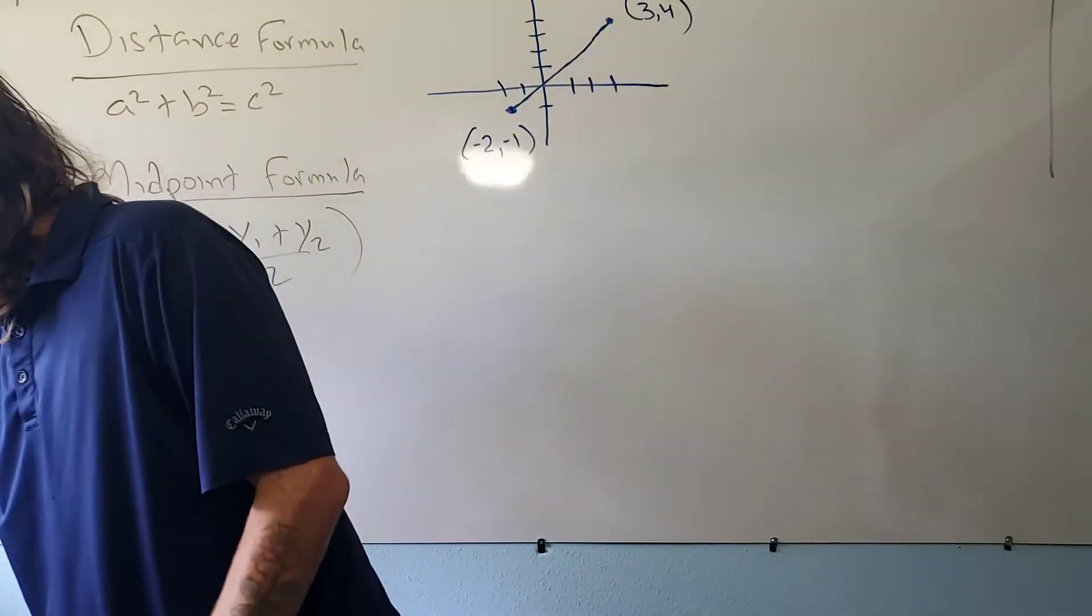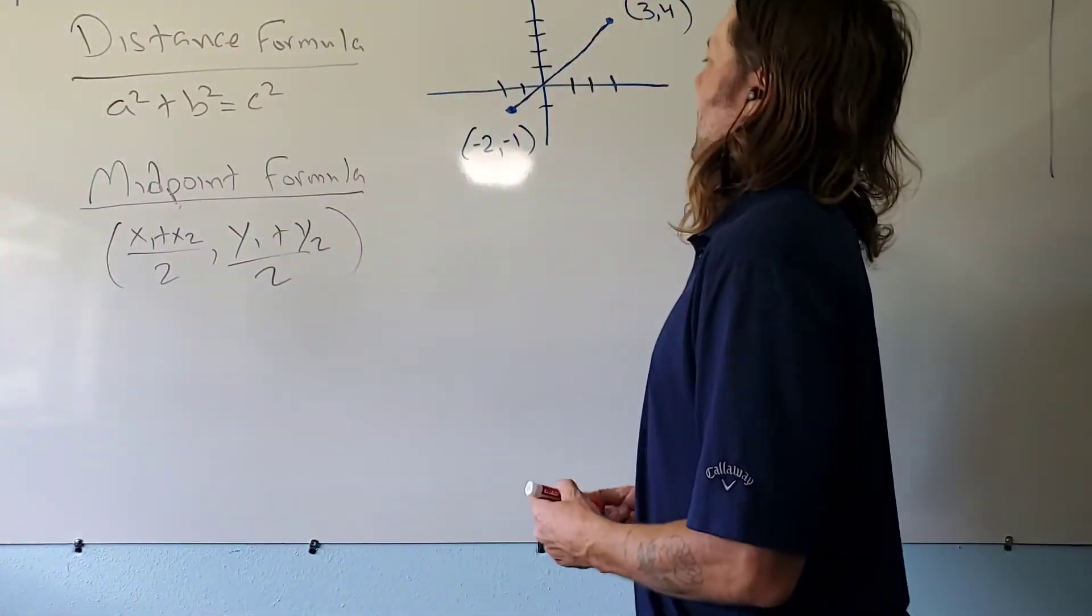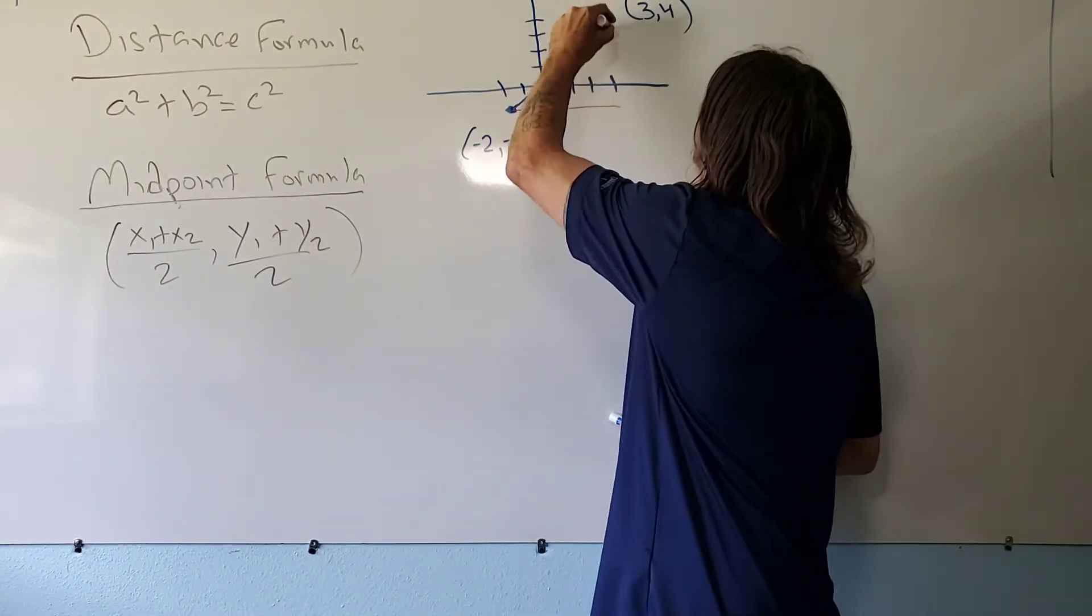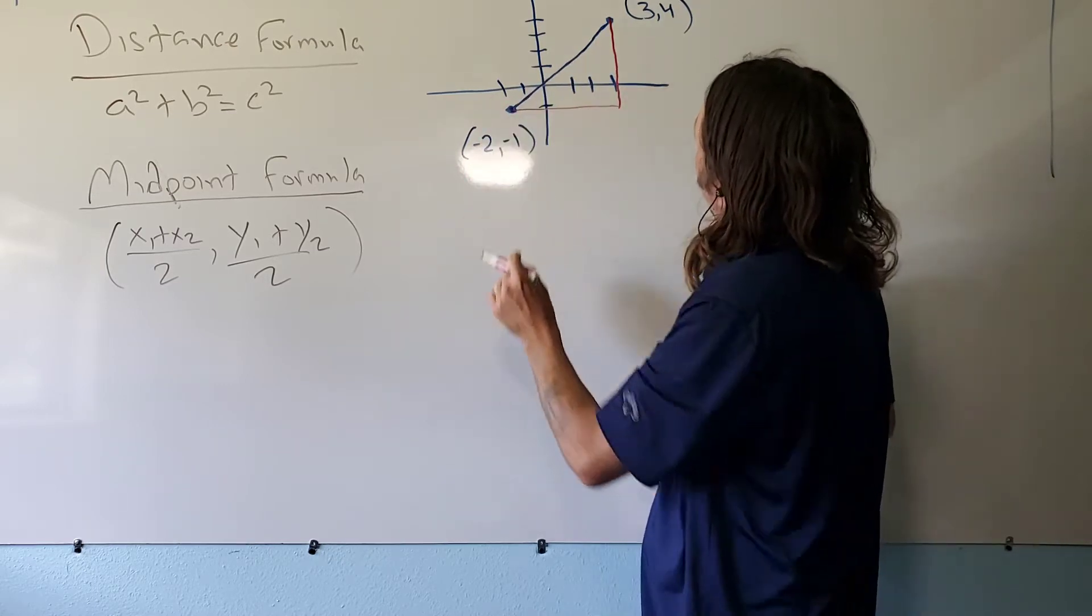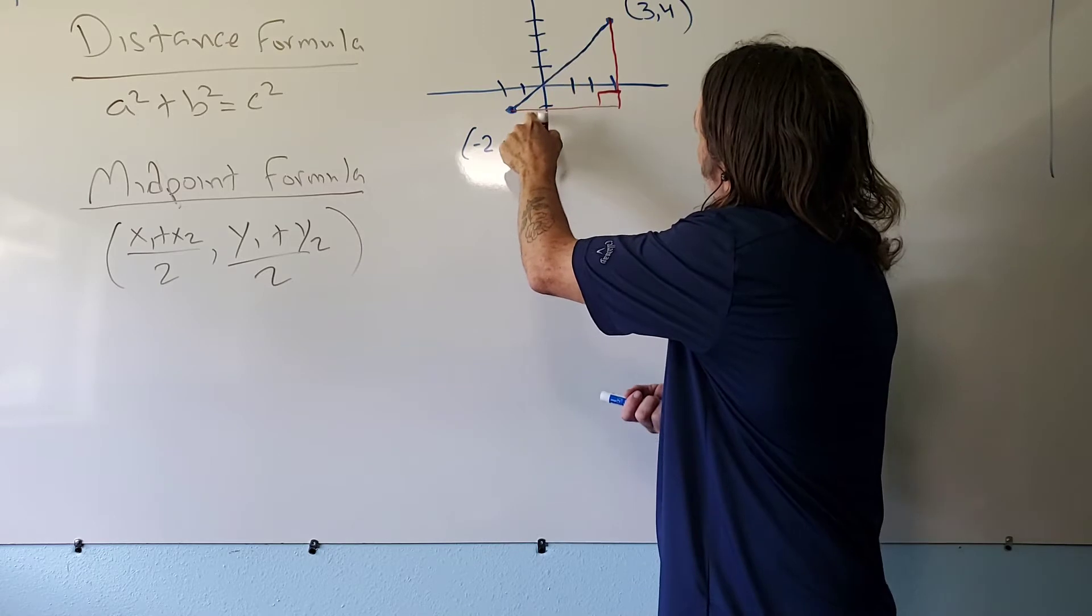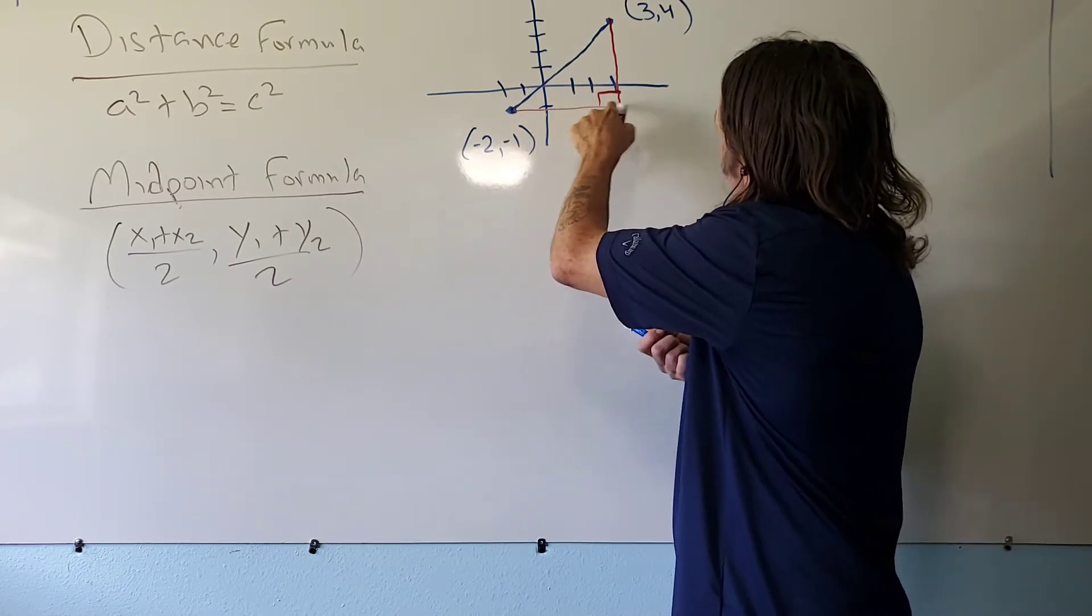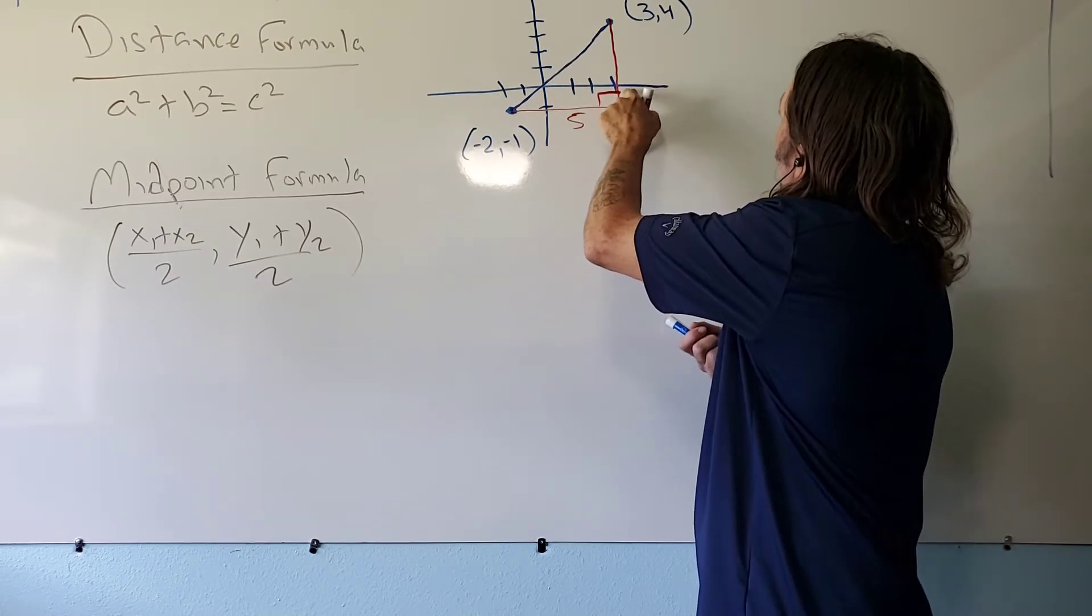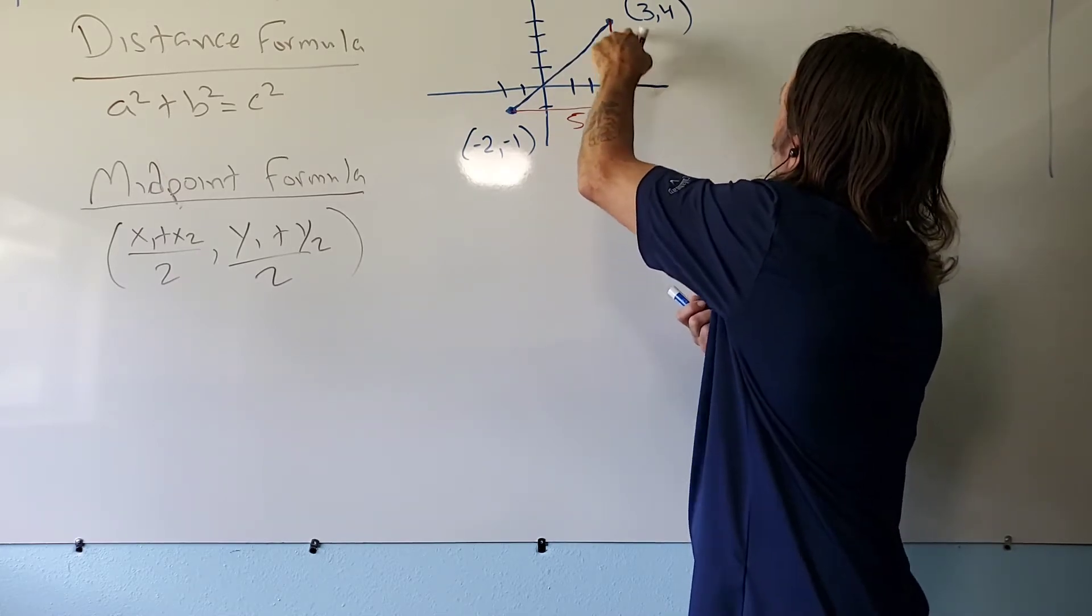So again, just like before, I'm going to make it into a right triangle and I'm going to count how far I went horizontally. So 1, 2, 3, 4, 5 and 1, 2, 3, 4, 5.